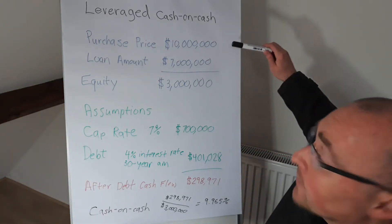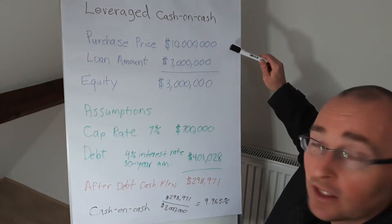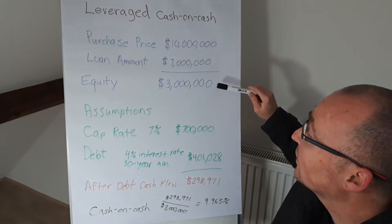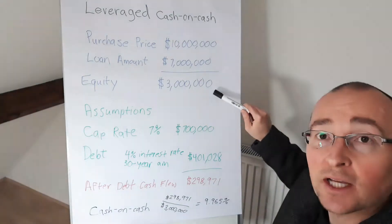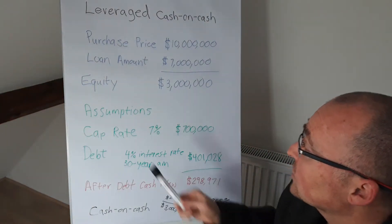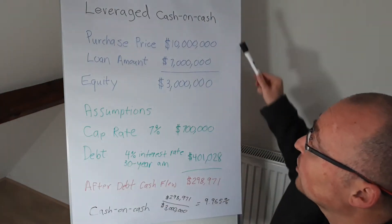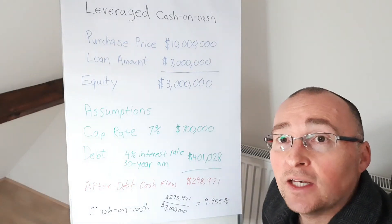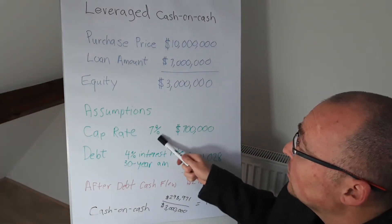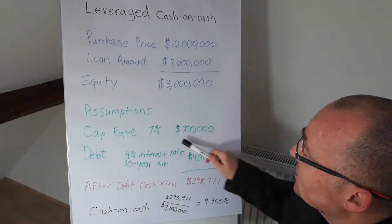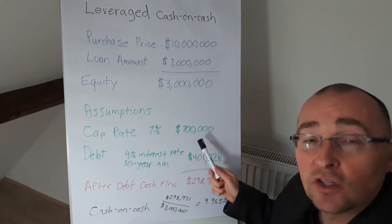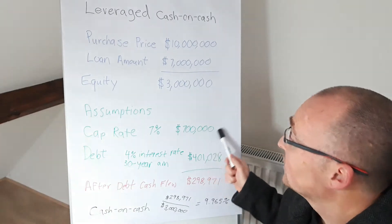To make it simple, we said that the purchase price was $10 million. We have a loan amount of $7 million, and therefore we have to inject $3 million of equity into the property to close. The assumption we're making is that on the purchase price, we're going to be able to get a cap rate of 7%, which means an unlevered return — if we had no debt — we would be getting 7%, or $700,000 of cash flow a year. So in this example, this is going to be our net operating income: $700,000.